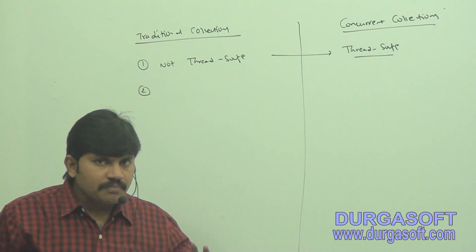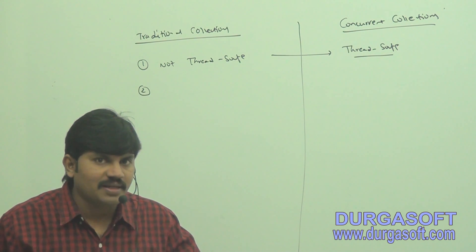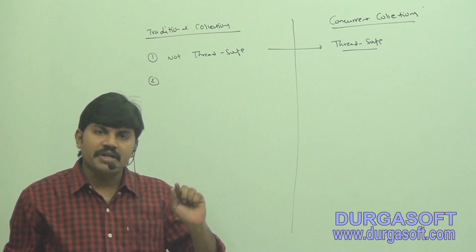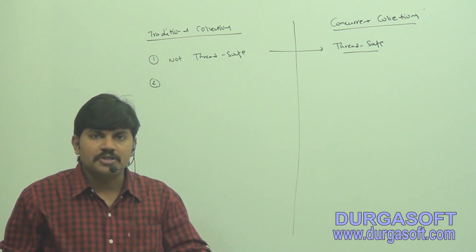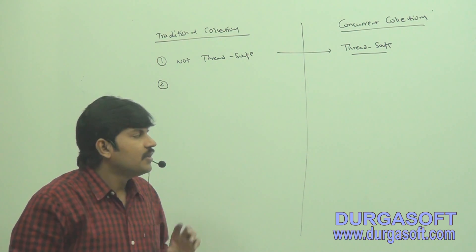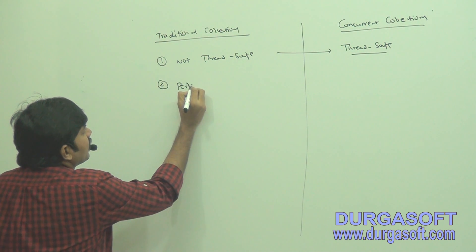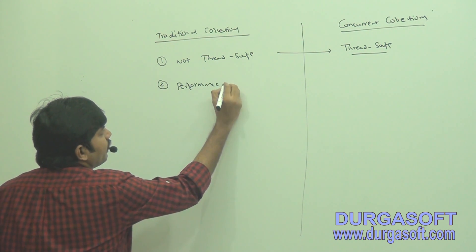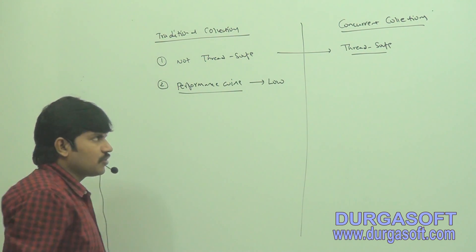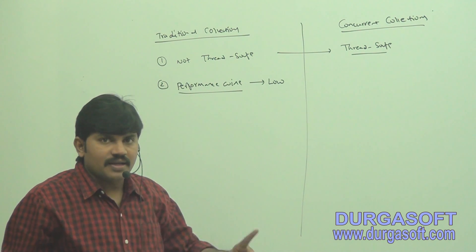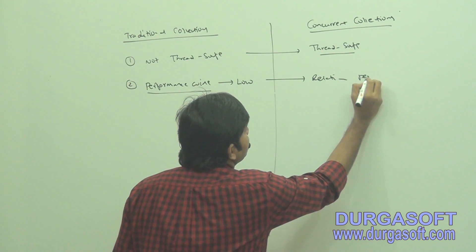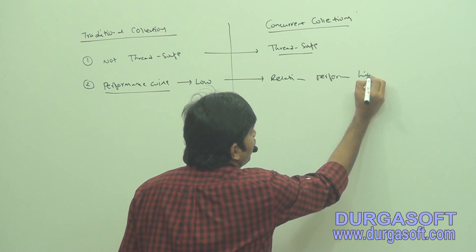Even some thread-safe collections like Vector and HashTable are not up to the mark performance-wise, because for any operation the total collection object will be locked by only one thread. That's why performance is low with traditional thread-safe collections, but concurrent collections have relatively high performance.